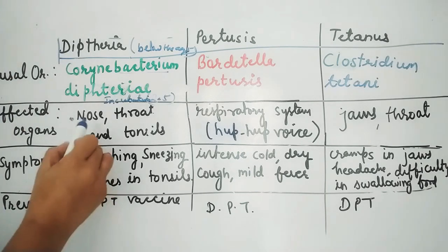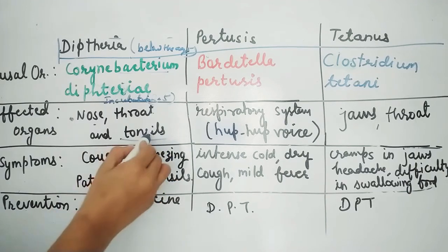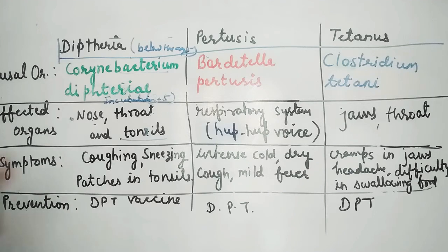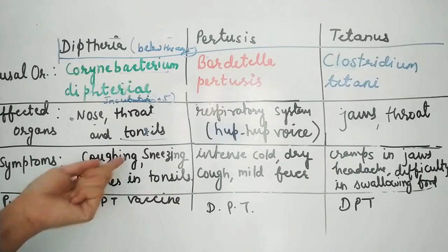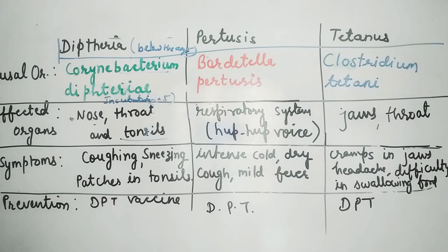Diphtheria affects the nose, throat, and tonsils. It causes mucous production. There is difficulty in breathing in the respiratory system. Symptoms include coughing, sneezing, and mainly patches on the tonsils. The tonsils are the biggest affected area.